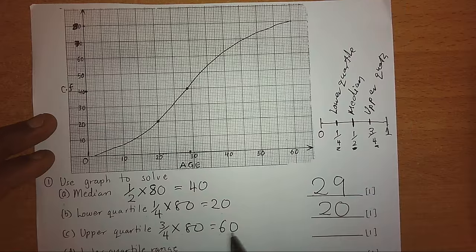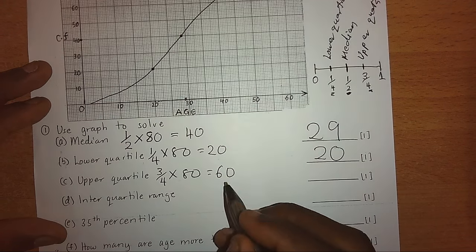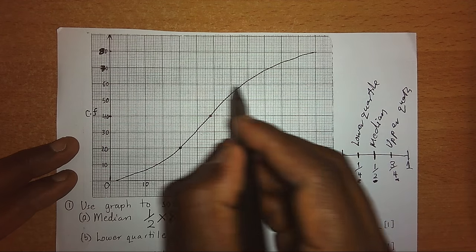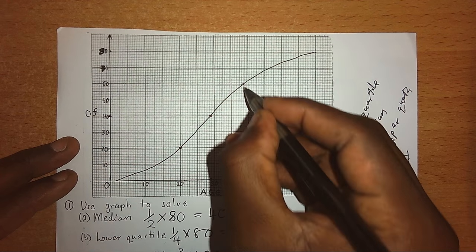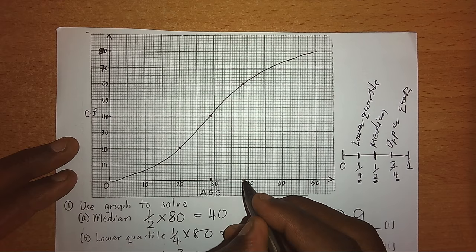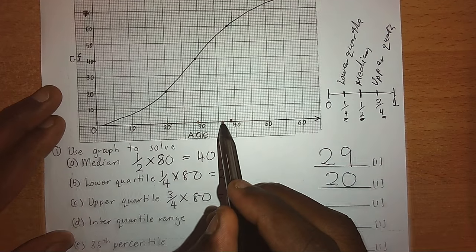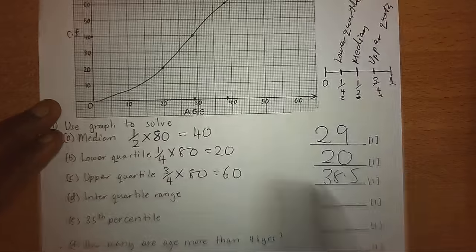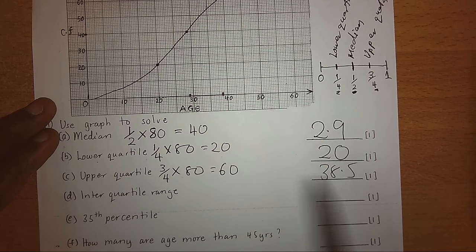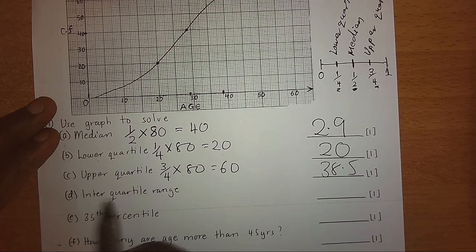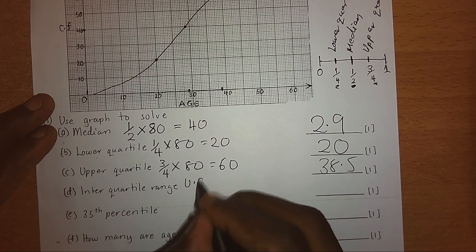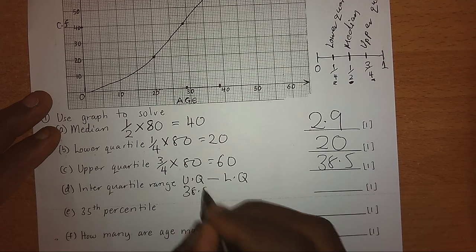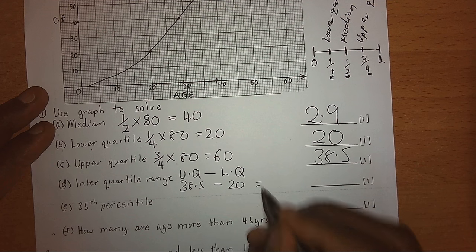For the upper quartile, our value is 60. We go to 60 on the vertical axis, move horizontally to the curve, then drop down and read the value — that gives us 38.5. So our upper quartile is 38.5. For the interquartile range, that is upper quartile minus lower quartile: 38.5 minus 20 gives us 18.5.